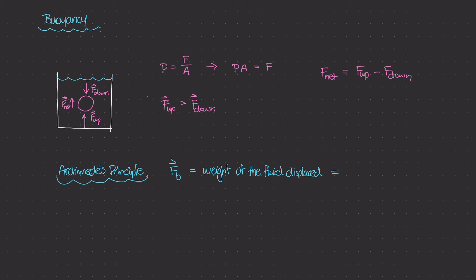So really, the magnitude of this Fb force, this buoyant force, is really the mass of the fluid times the gravitational constant. M times G gives us weight, and this subscript F is just the fluid. In this case, it's water.